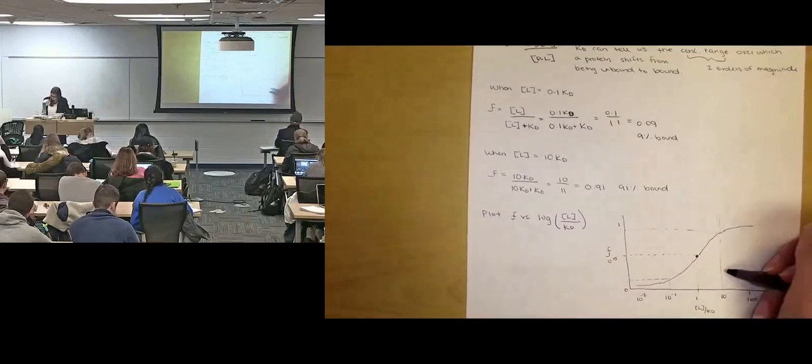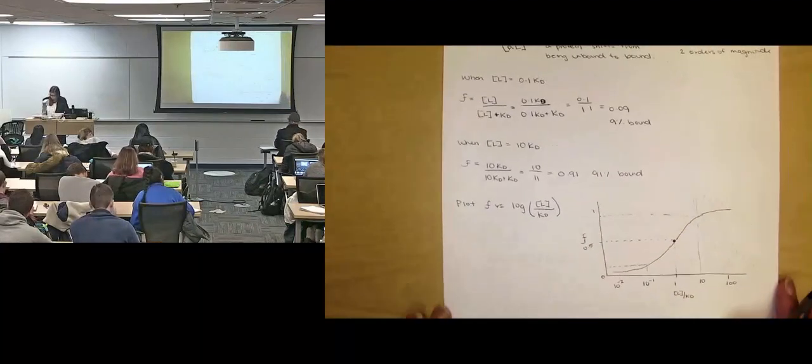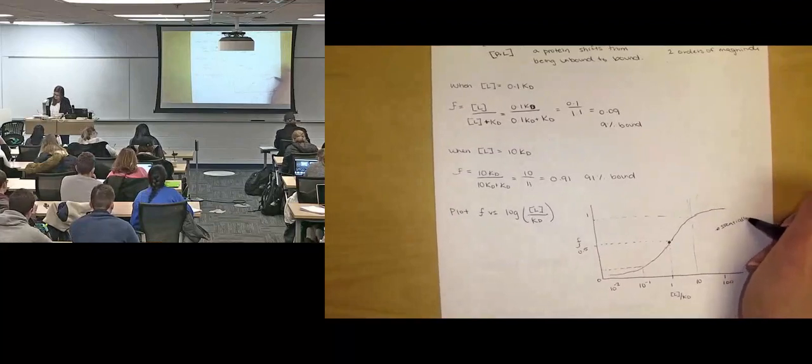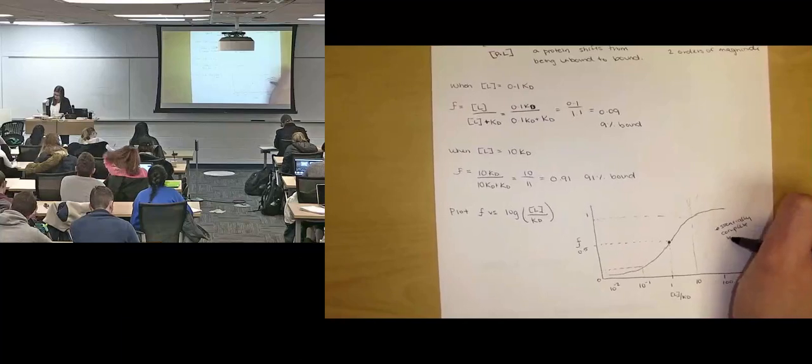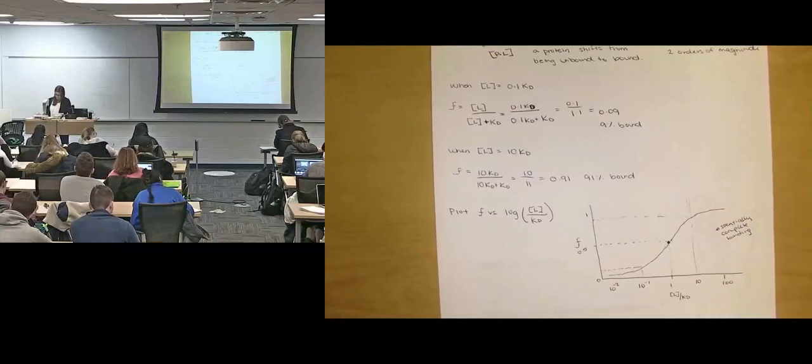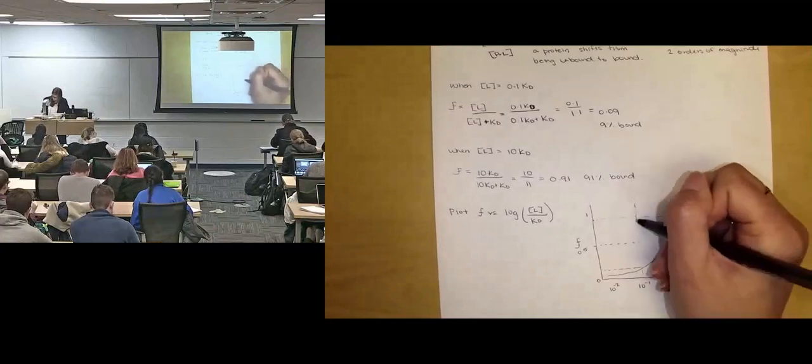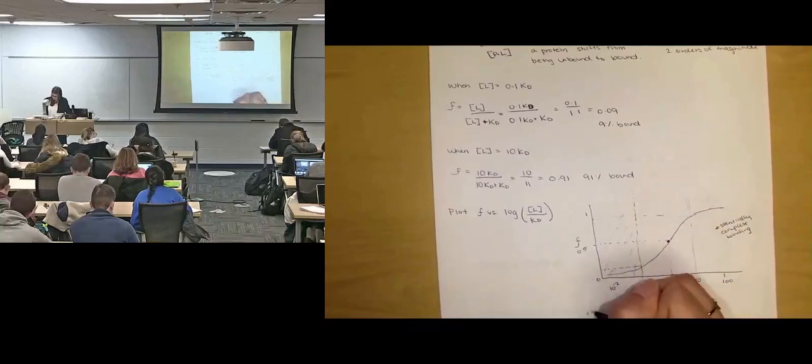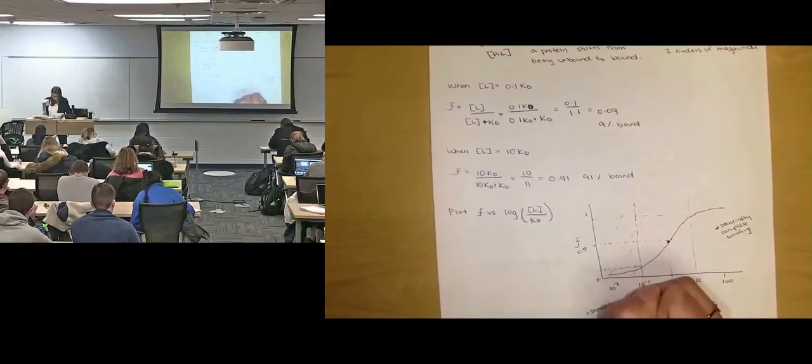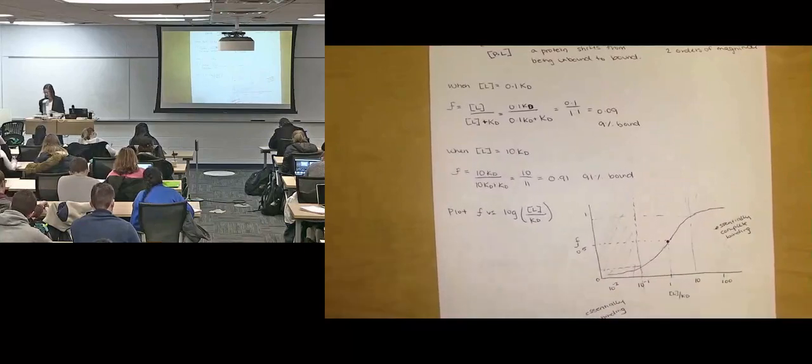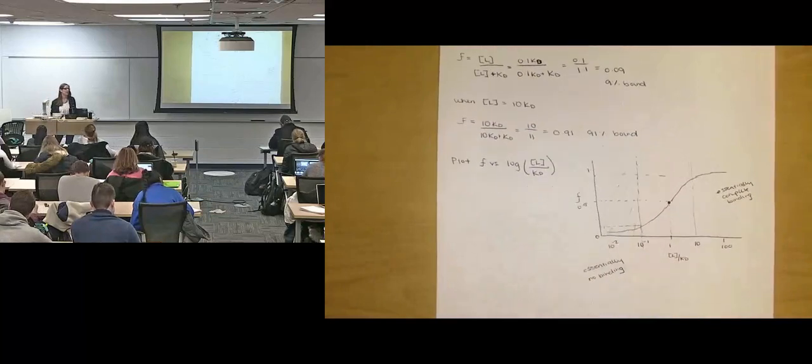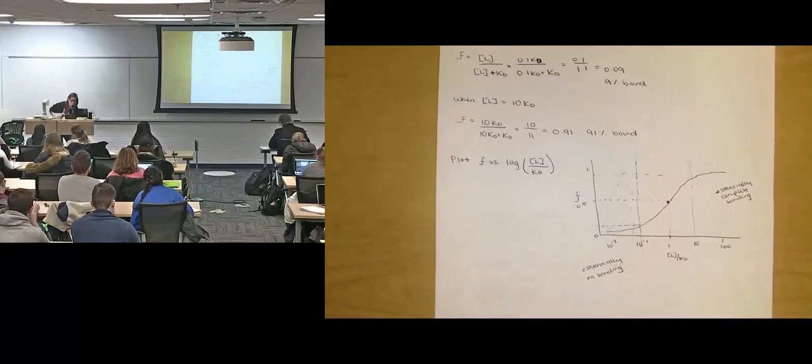Basically, greater than 10 over here, when the ligand concentration is 10 times greater than KD or more, we consider this to be essentially complete binding. And over here, when the ligand concentration is less than one-tenth of the dissociation constant, we consider this to be essentially no binding. Like, yes, this was 91 and 9, but we're saying that that percent of protein bound isn't enough to have the downstream effects.